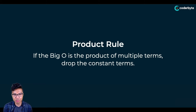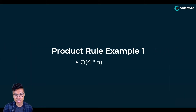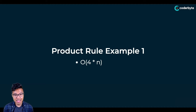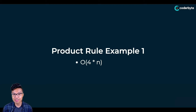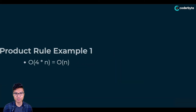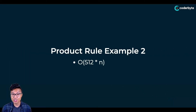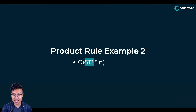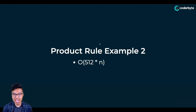Let's go through an example. Given O of four times n, four is a constant, so I can drop that term. The answer in simplest form is just O of n. Similarly, given O of 512 times n, no matter how big that constant number is, it's still a constant. So you can totally drop it if it's multiplied to your input variable. 512 times n really just gives us O of n.